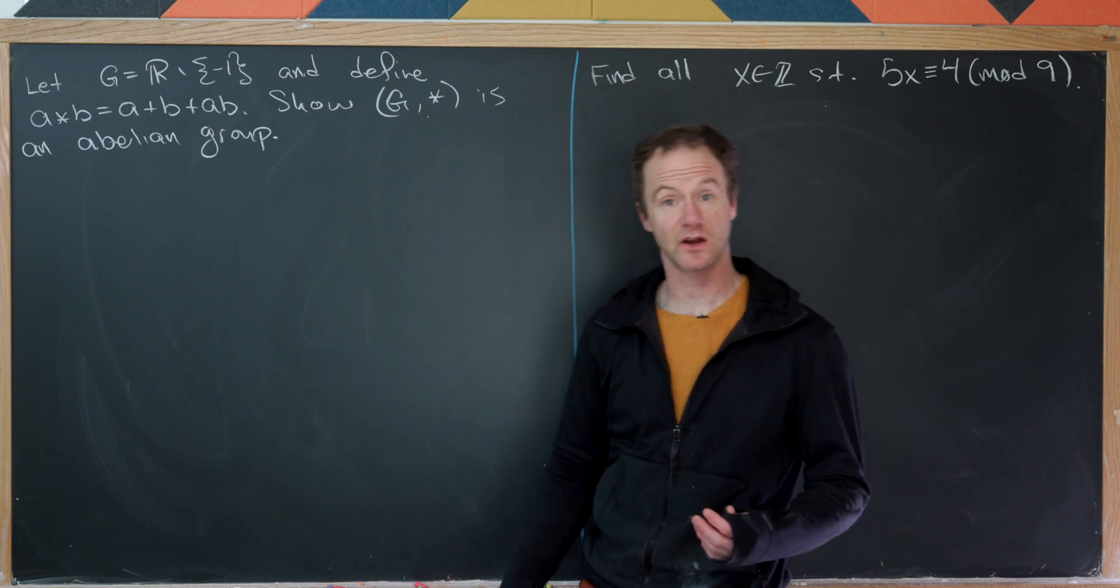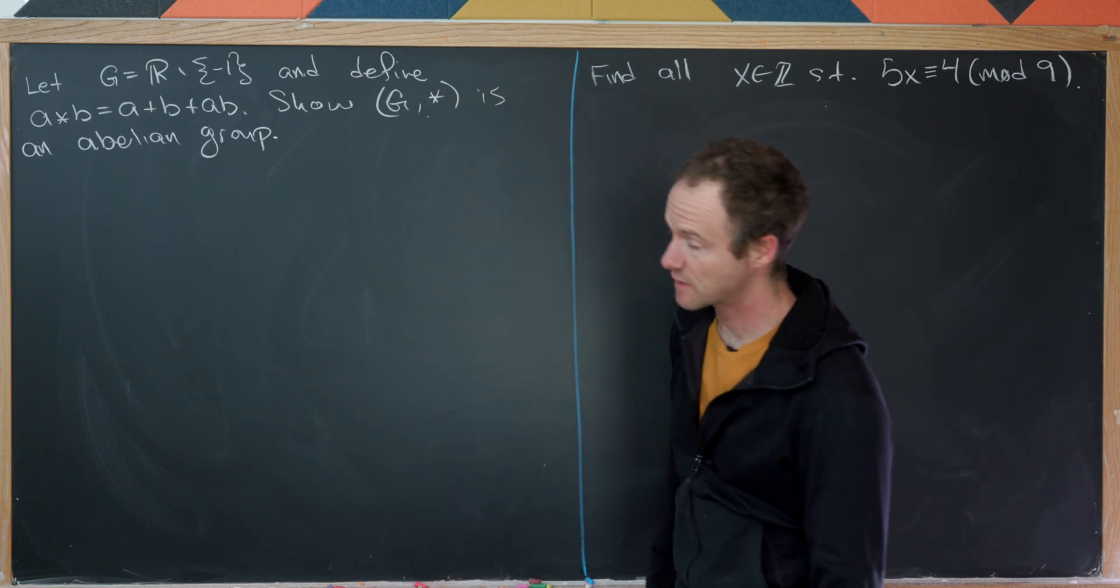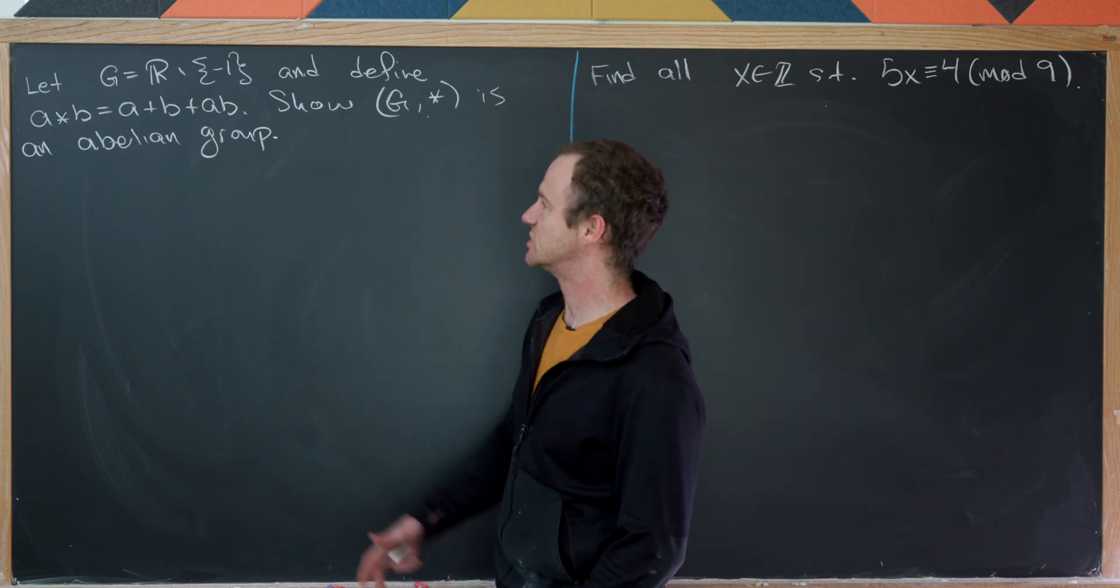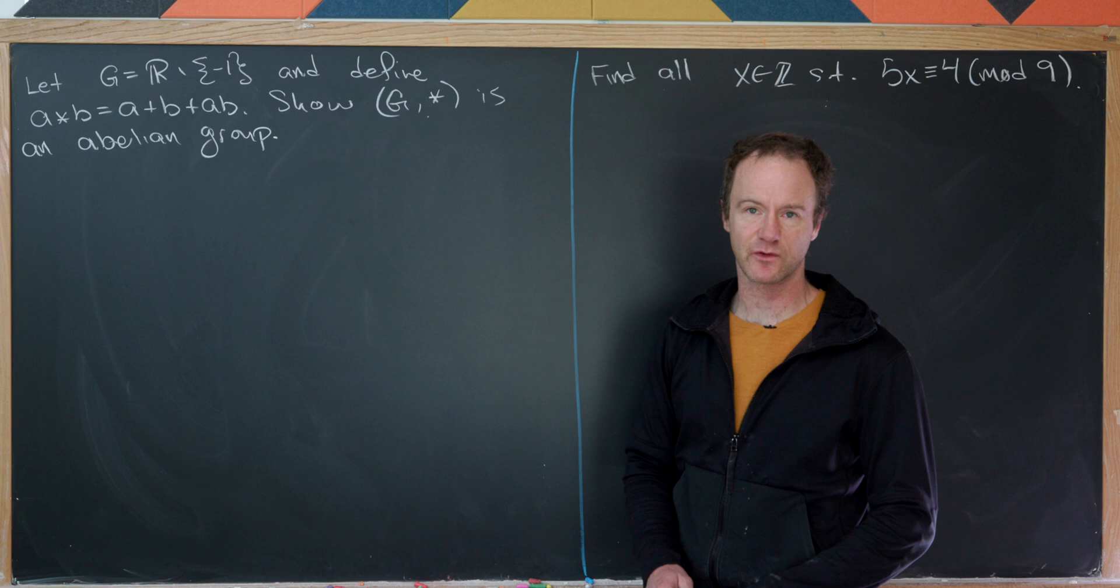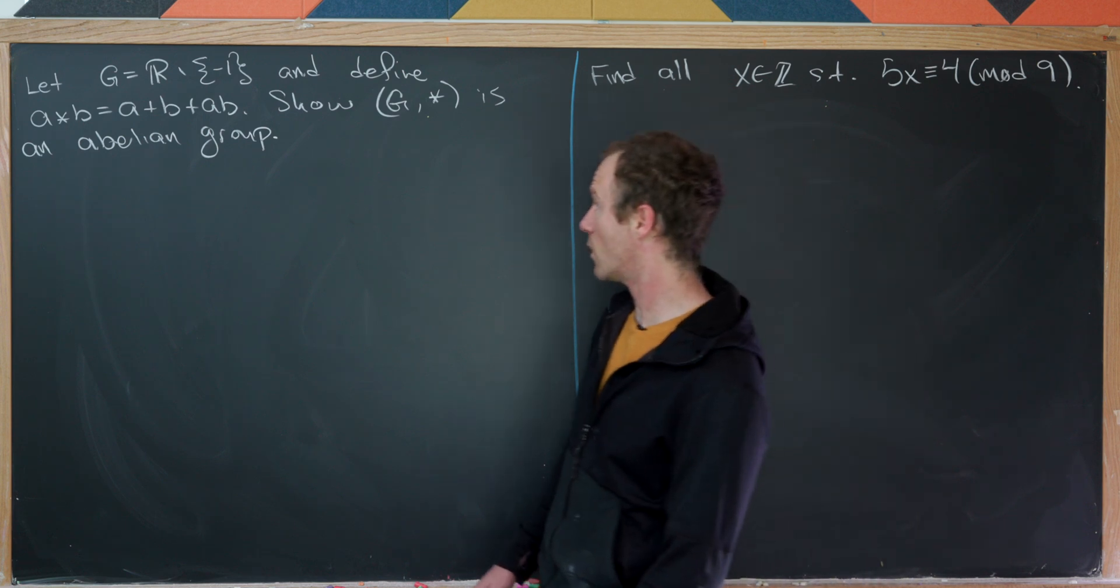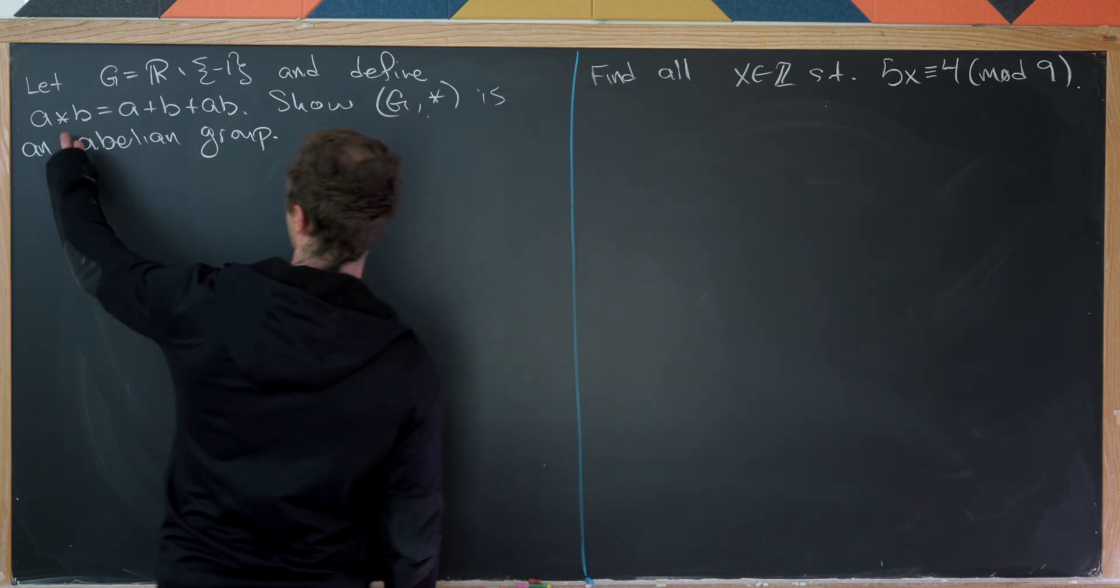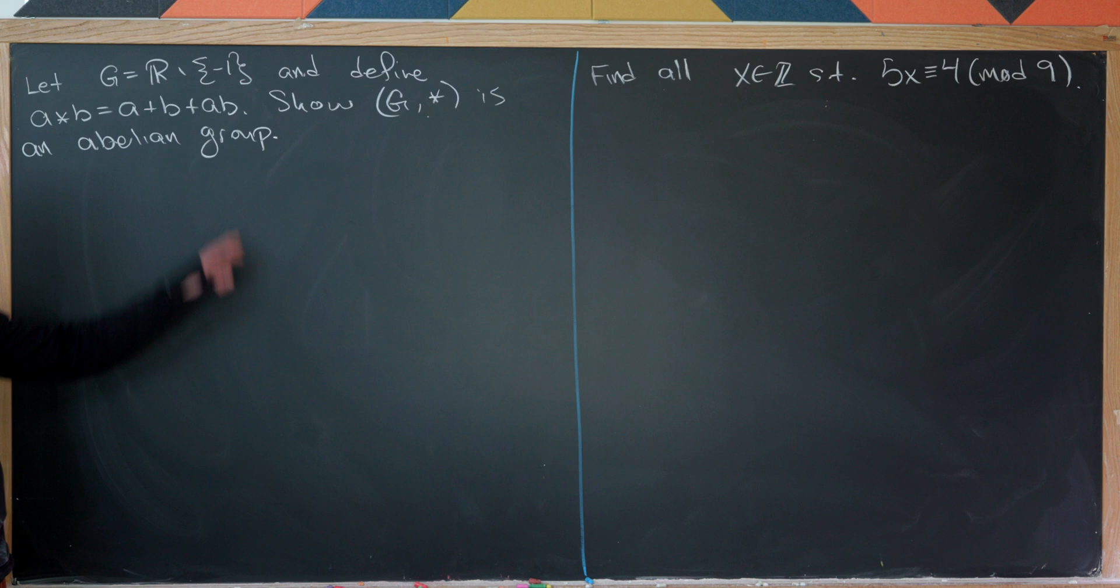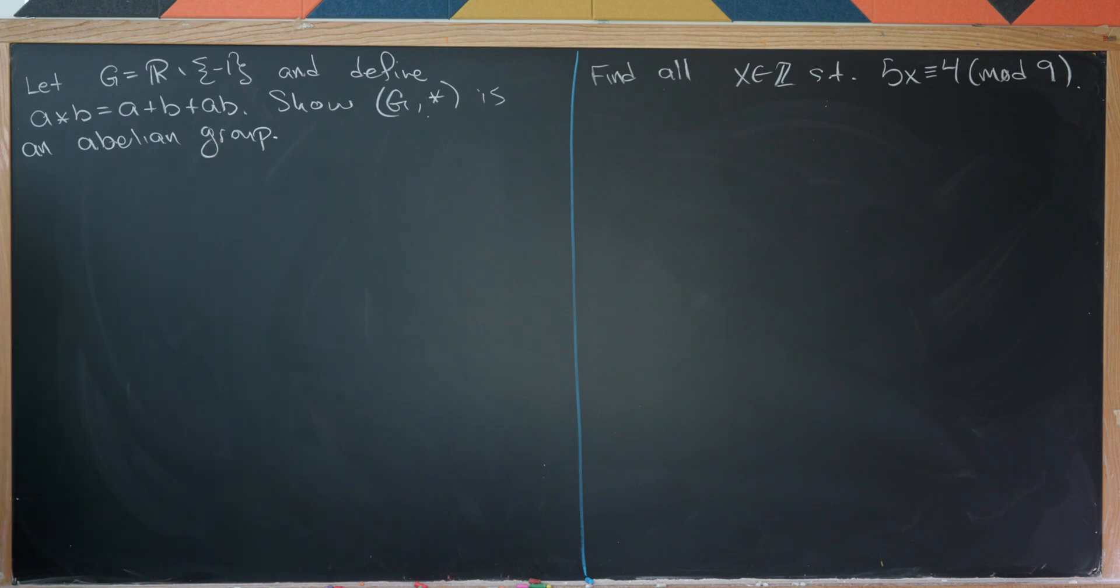This is the third example video for our series on abstract algebra. So let's jump right into it. For the first one, let's let G be equal to the set of real numbers without the number negative 1. And then we'll define this operation star so that a star b equals a plus b plus ab. And then our goal is to show that G together with star is an abelian group.